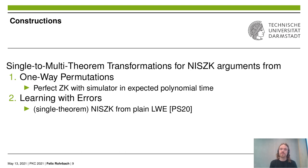As our second contribution, we give two constructions of single-to-multi-theorem transformations for non-interactive statistical Zero-Knowledge arguments in the common random string model that indeed retain adaptive-exclusive soundness. Our first transformation requires the existence of one-way permutations, and we can extend this transformation to even retain perfect Zero-Knowledge, though we require the simulator to run in expected polynomial time for this. Our second transformation is based on the learning with errors assumption, fitting nicely with the recent construction of single-theorem statistical Zero-Knowledge arguments based on plain learning with errors by Peikert and Shiehian.